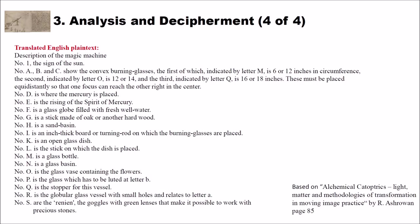Now let's have a look at the description of the machine or the English plaintext. And here you can see number one, the sign of the sun. I think these two parts are not encrypted. And here we have the encrypted or now decrypted part. So number A, B, and C show the convex burning glasses, the first of which indicated by letter M is 6 or 12 inches. And these numbers are actually not encrypted. So you have these in cleartext in the book inside the ciphertext. Inches in circumference. The second indicated by letter O is 12 or 14. And the third indicated by letter Q is 16 or 18 inches. These must be placed equidistantly so that one focus can reach the other right in the center. So I think this is a description how to construct this binocular.